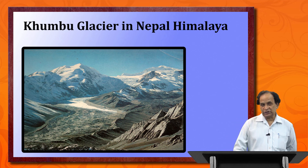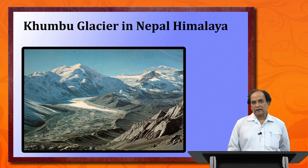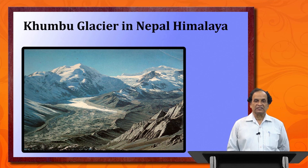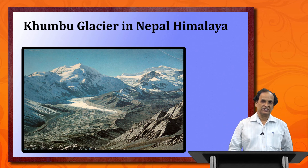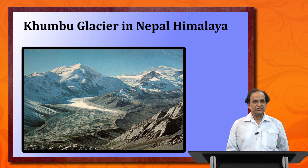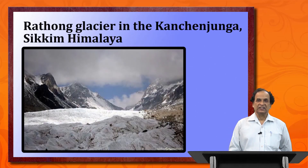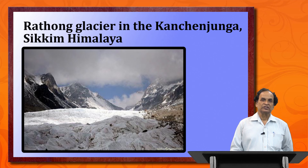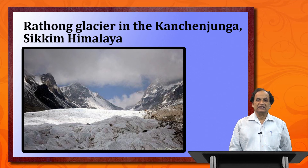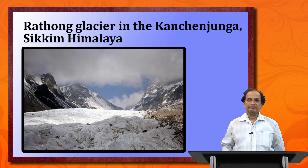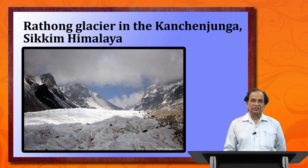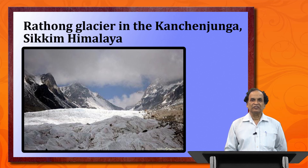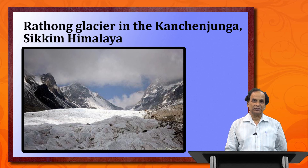Moving east to Sikkim Himalaya, the Zemu Glacier is small but important — geomorphologists often visit to study its retreat pattern. This is called the Rathom Glacier in the Kanchenjunga area of Sikkim Himalaya; the main Kanchenjunga summit is hidden under cloud. A satellite image shows how in the Eastern Himalaya the glaciers take off from the snow-laden névé field areas and stretch through the valleys down to the lower parts of the mountains.